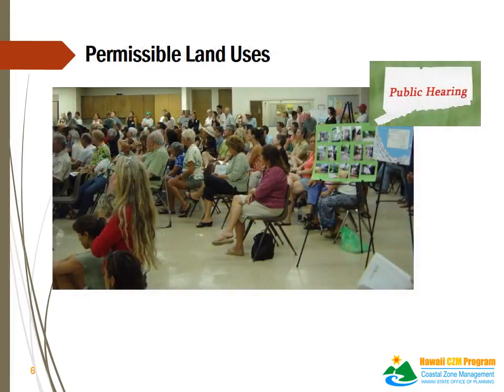The public sometimes uses the SMA permit process to raise their land use policy concerns. However, the SMA permitting system does not establish land use policies and does not determine land uses. The SMA permit regulates permissible land uses that are already allowed by land use policies including zoning designations, development plans, and county general plans. When there is a lack of mitigation measures for a project, or mitigation measures cannot achieve consistency with the CZM objectives and policies of the SMA guidelines, an SMA permit will be denied and the proposed action within the SMA will not be permitted.